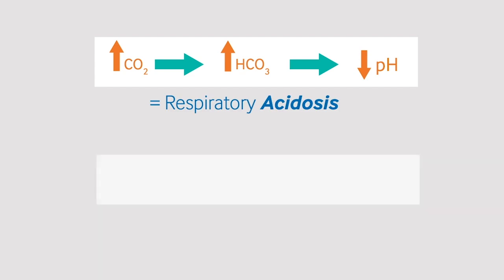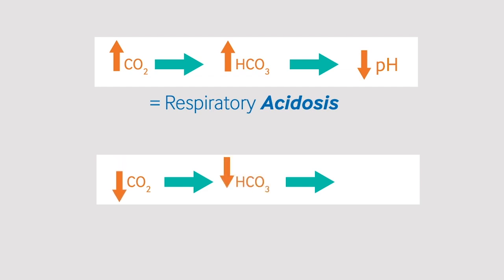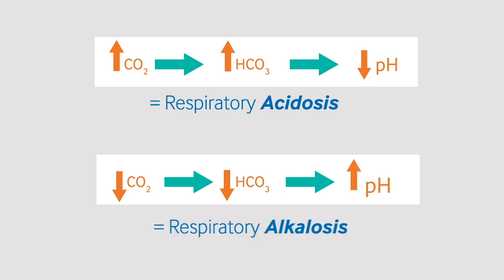If the patient hyperventilates, then the carbon dioxide level will fall, and so there will be a reduction in carbonic acid. This will lead to a rise in the pH, leading to a respiratory alkalosis.